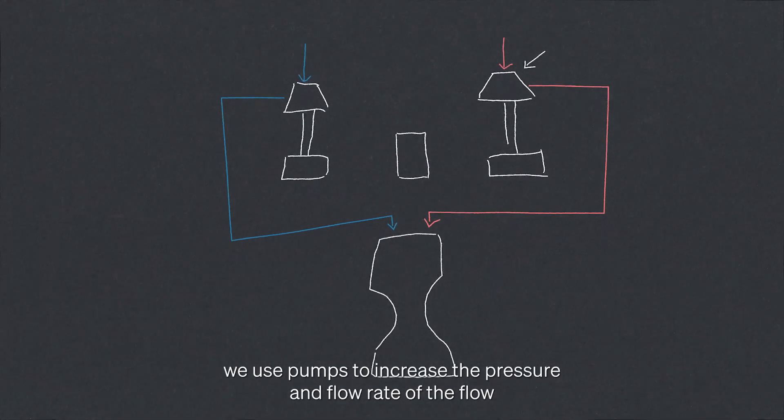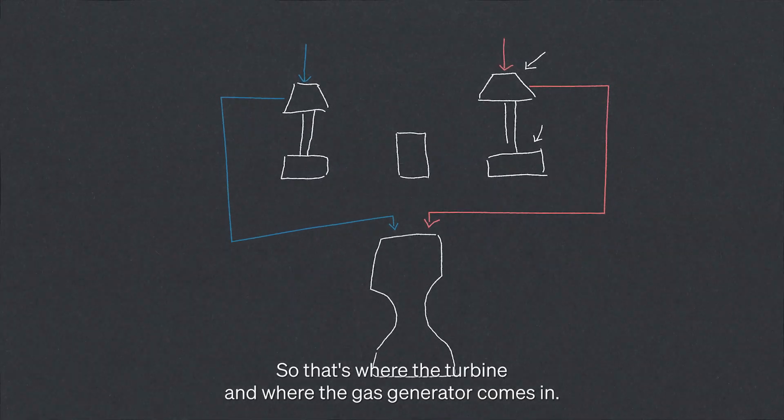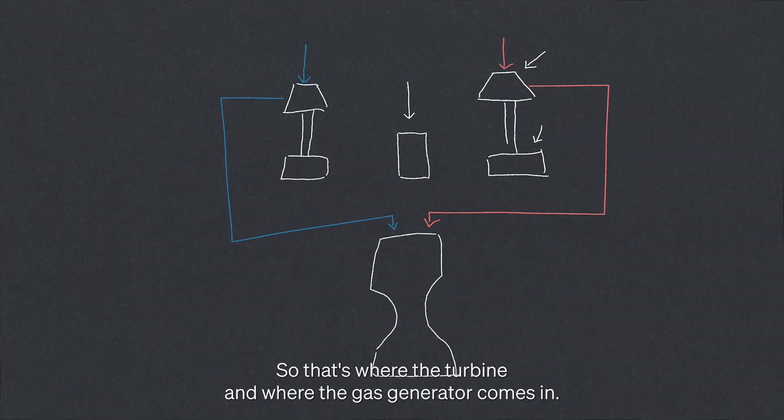We use pumps to increase the pressure and flow rate of the flow that goes to the main combustion chamber, but somehow we need to drive those pumps. That's where the turbine and gas generator comes in.